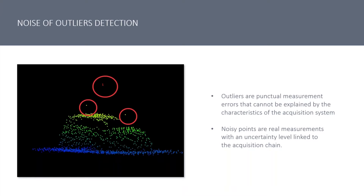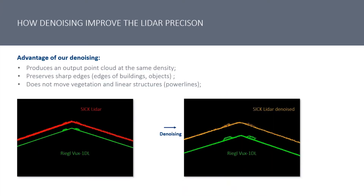With this special module, it can easily identify this type of outliers and delete them automatically from the data and recalculate the point cloud into the actual surface. The first advantage of this special module is that it produces an output point cloud at the same level of density — meaning it will not delete or reduce the density of point clouds. This module just recalculates the point cloud on the correct actual surface.